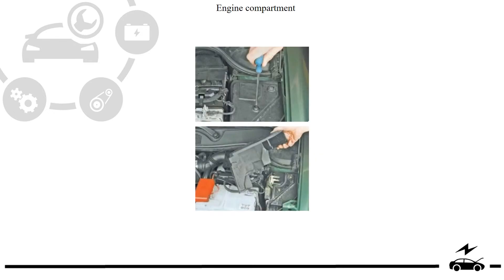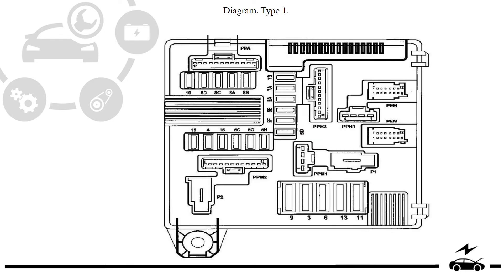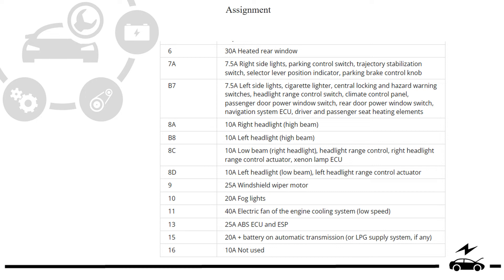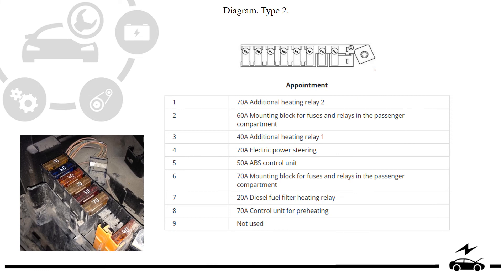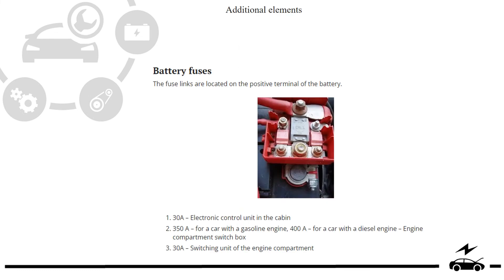Engine compartment fuse box: location, diagram type 1, assignment, diagram type 2, and additional elements.